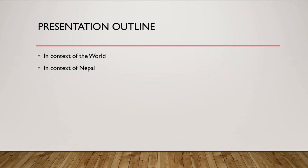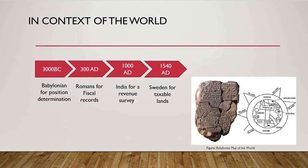As this topic deals with past events, we will be dealing with dates. In the past, mapping is said to have started in Babylonia in 3000 BC for position determination. This is the so far known oldest map in the world. The Romans in 300 AD mapped land for fiscal records.